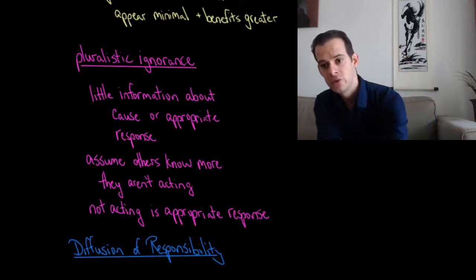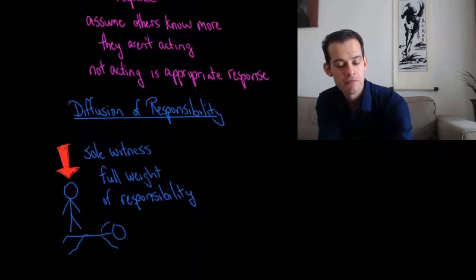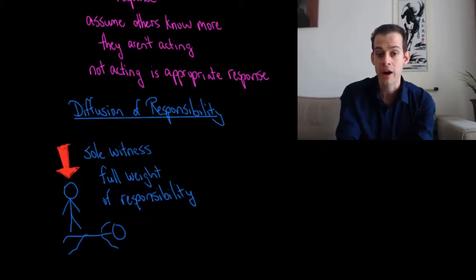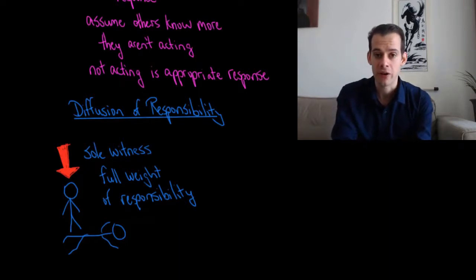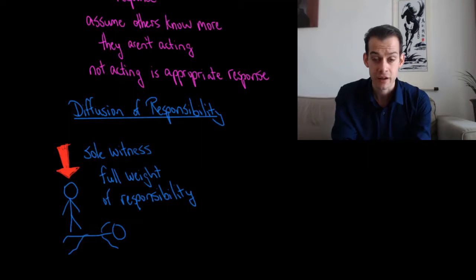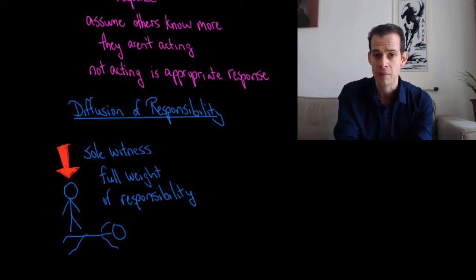Another way to think about why people don't act is the diffusion of responsibility. This is the idea that when other people are around, the responsibility, the feeling that we should help, gets spread out amongst the crowd. So if you're the sole witness to an event, then you feel the full weight of responsibility. So if I see a person collapse on the street, and I see there's no one else around, I know that if I don't do something, then nobody will do anything. This person won't get help unless I provide it. And so I feel the full weight of responsibility.